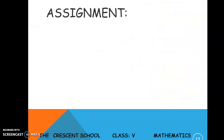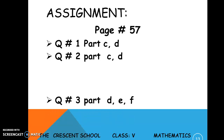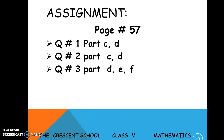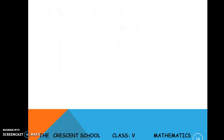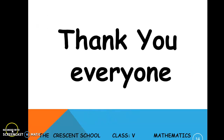That covers rules 1, 2, and 3 of order of operations. Your assignment is on page 57: question 1 parts C and D, question 2 parts C and D, and question 3 parts D, E, and F. Thank you everyone.